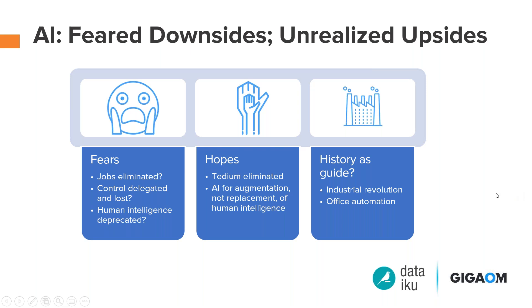That's where AI for augmentation comes in — we automate things that don't really require your brain as much, so you as an analyst or someone on the business end can start making better decisions. Let the AI do the things that aren't as fun, so you can do the stuff you're good at and that drives real value. I can't imagine folks were biting at the chomp to collect faxes back and forth. Being able to automate that stuff puts it in the background so we can focus on using our intelligence in the right way.